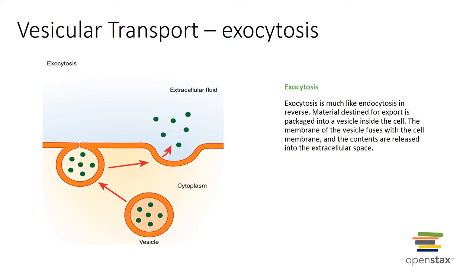Exocytosis is much like endocytosis in reverse — a vesicle fuses with the plasma membrane and the contents are released into the extracellular fluid. Examples include hormone secretion, neurotransmitter release, and removal of metabolic waste products. To summarize, the active processes discussed are primary active transport, secondary active transport, exocytosis, phagocytosis, pinocytosis, and receptor-mediated endocytosis.